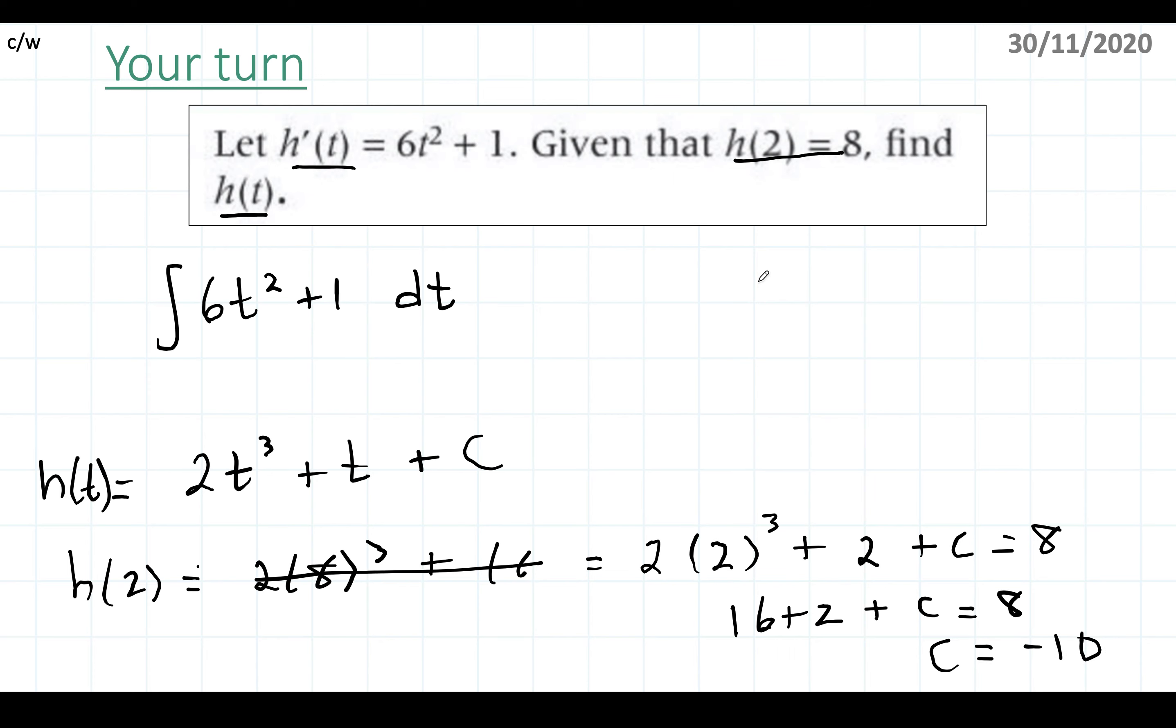Okay, so our final answer is h of t equals 2t cubed plus t minus 10. So we have all the values in there to help us, and that's what we call the initial condition—it helps you not eliminate the c, but actually know what the c value is.